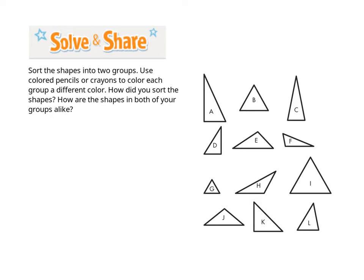Is there another way you might be able to sort these triangles? Yes, I see that there are several triangles that have equal sides: letter B, triangle I, and triangle G. That is another way you could sort these triangles.